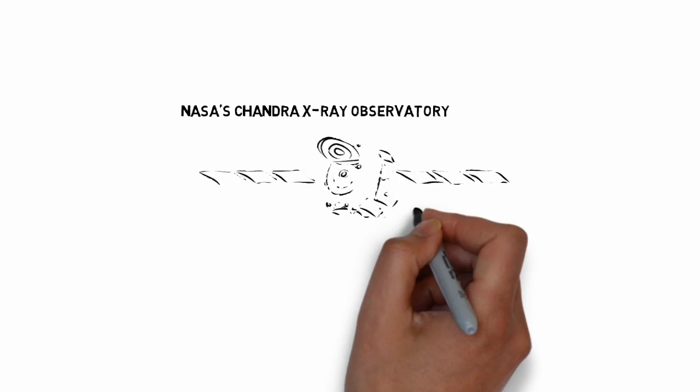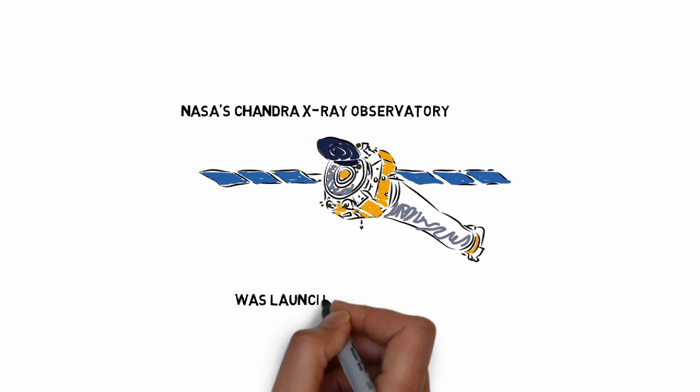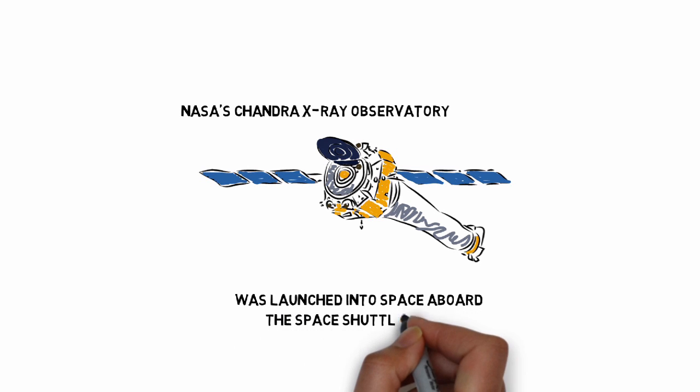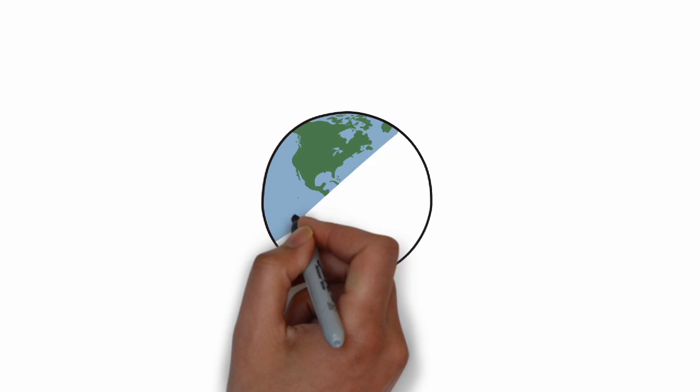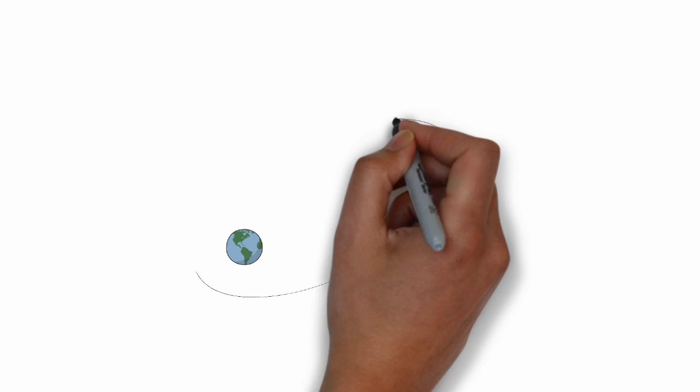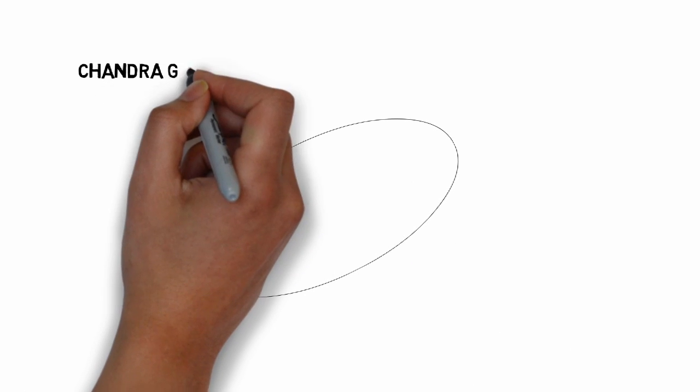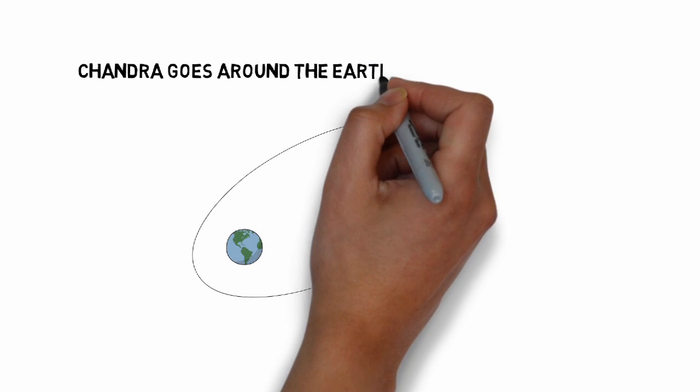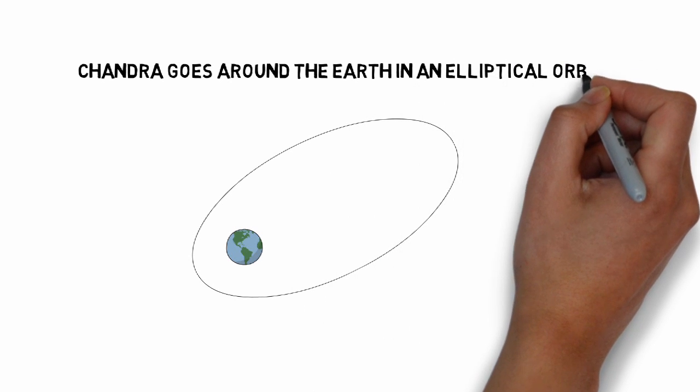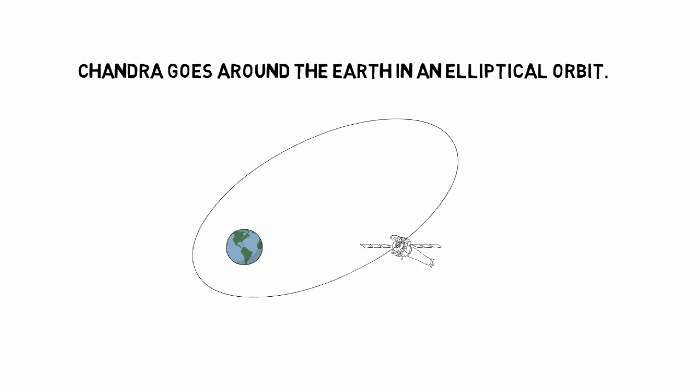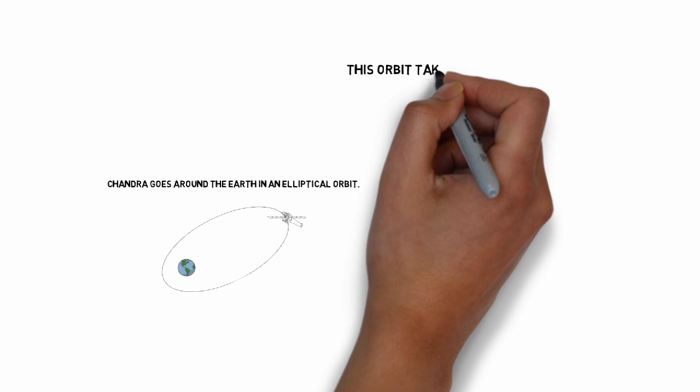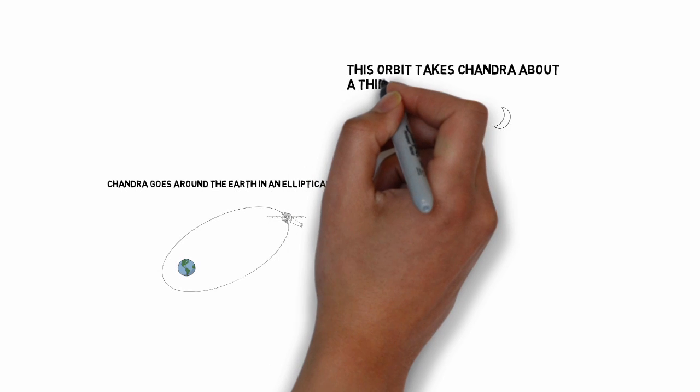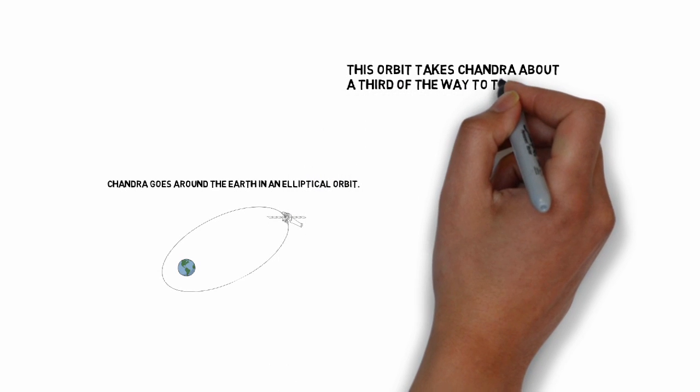NASA's Chandra X-ray Observatory was launched into space aboard the space shuttle in 1999. Chandra goes around the Earth in an elliptical orbit. This orbit takes Chandra about a third of the way to the moon.